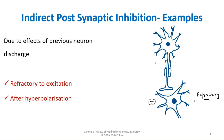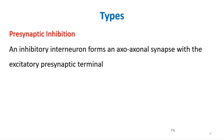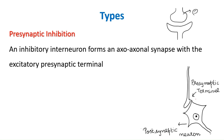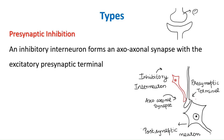The next type is presynaptic inhibition, where the presynaptic neuron itself is affected. In a normal synapse, an interneuron forms an axoaxonal synapse with the presynaptic terminal and releases GABA there. This inhibits the presynaptic neuron so it cannot pass on its information to the postsynaptic neuron. This type is called presynaptic inhibition.